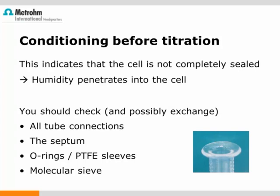Somewhere in the system there is a leak, and humid air can enter the titration cell. The humidity causes the too-high drift. Therefore, you should check all connections, tubing connections, and so on. Furthermore, you should have a look at the septum, the O-rings, or in coulometry the PTFE sleeves, and also at the molecular sieves. Maybe some of these parts need replacement.